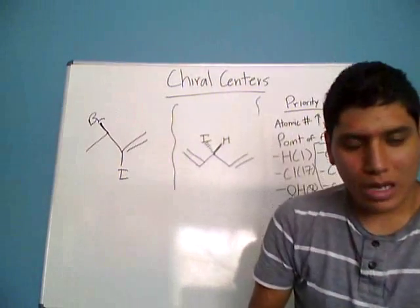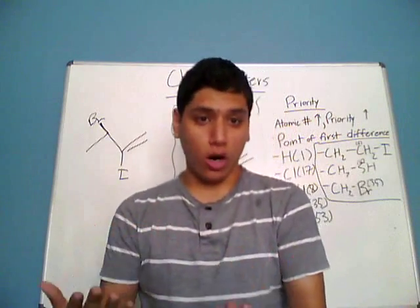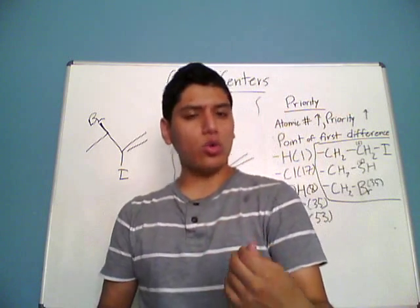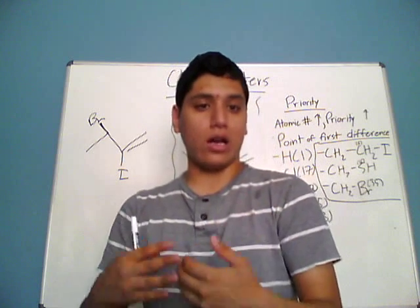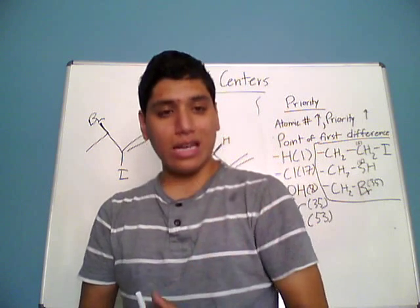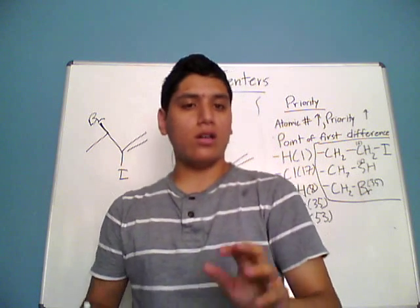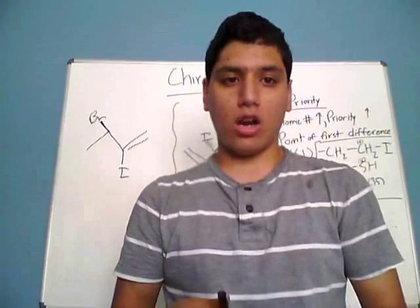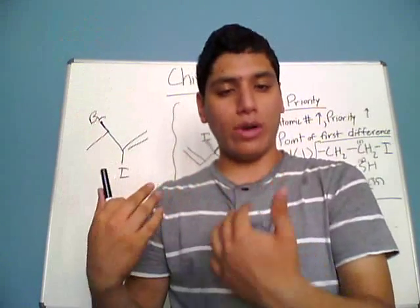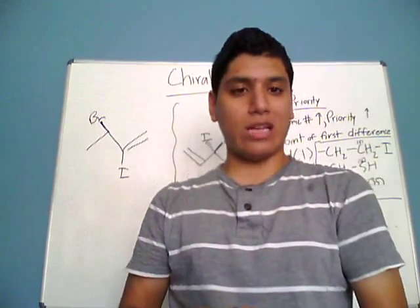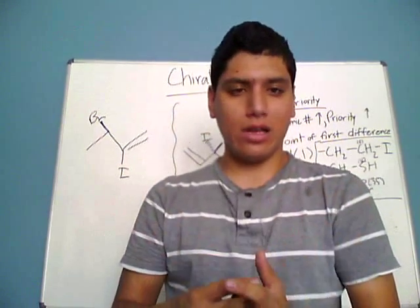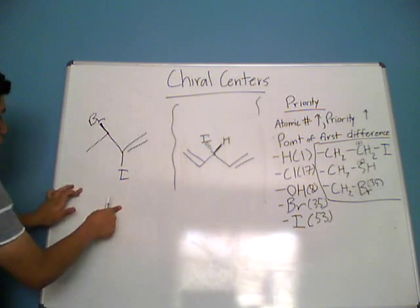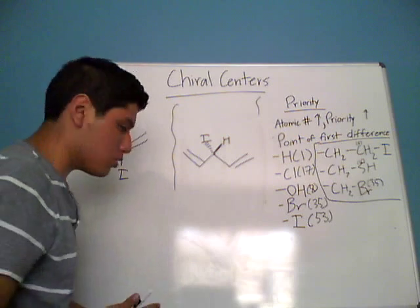Now that we know what chiral centers essentially are, we're going to look at how to identify chiral centers within a compound. One more important thing about chiral centers is that they also have to follow the tetrahedral arrangement — if you have a carbon that's a chiral center, its four substituents have to be arranged in a tetrahedral arrangement. So in this first example, we're going to be identifying the chiral centers.